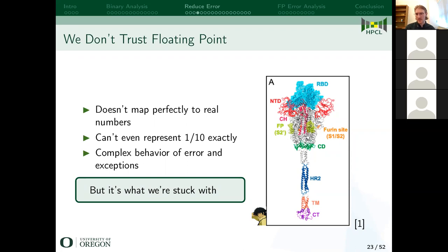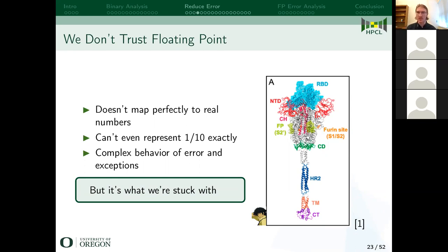In high-performance computing, if you get an answer, you might have some notion based on the numerical method, but the actual floating point error is not tracked. I hope we get to a point where we can express error along with a computation, so we can actually begin to trust these computer models. The biologists I've talked to have said that computer simulation is a great search space, but things actually need to be made in the wet lab to be real in some sense. Hopefully this work is a step toward changing that.